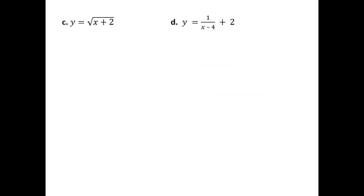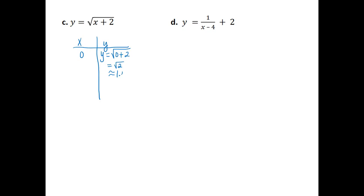Part C is the equation y equals the square root of x plus 2. We can let x equal zero and solve for y. So y would be equal to the square root of 0 plus 2, which is just the square root of 2, which is approximately 1.4.